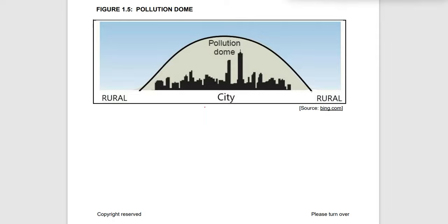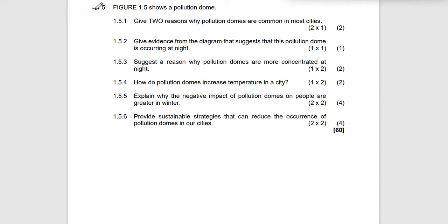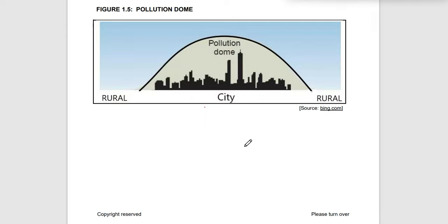Today we are going to look at pollution domes. We also have the revision taking us to question 1.5. The definition of a pollution dome: it is a mass of polluted air in and above a city, or from an industrial complex, which is prevented from rising by the presence of an inversion above it.